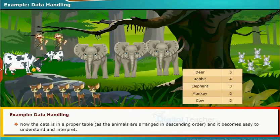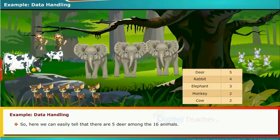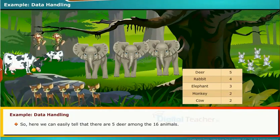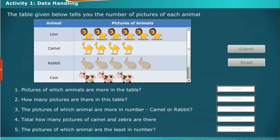As the animals are arranged in descending order, it becomes easy to understand and interpret the data. We can easily tell that there are five deer among the 16 animals. Now let us perform an activity on data handling. The table given below tells you the number of pictures of each animal.